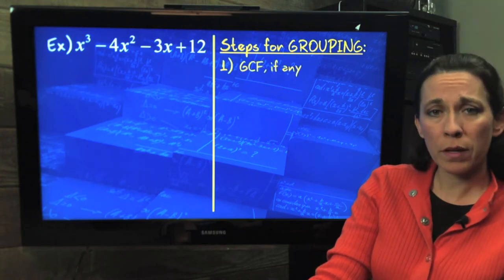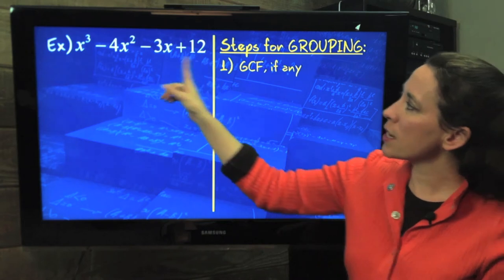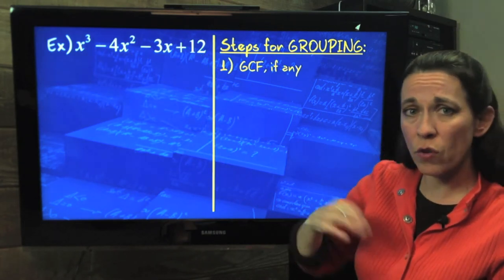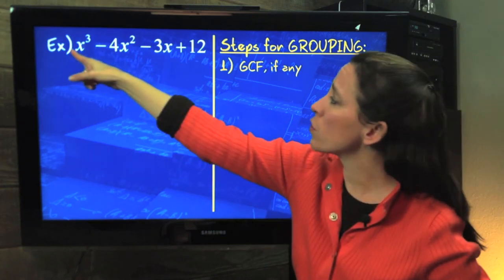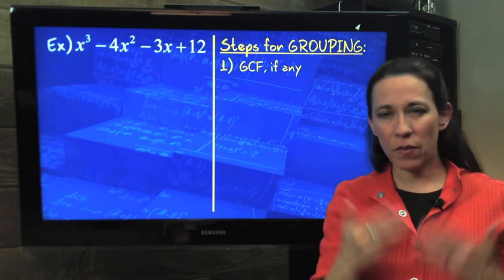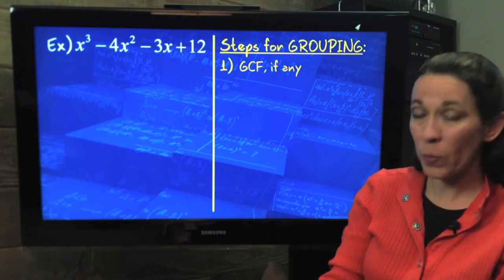So here are the steps for grouping. First step, GCF if any. There's no GCF among the 4 here. This last constant does not have an x, so there's no variable in common. This first one here has a coefficient of 1, so taking out a GCF of 1 doesn't really do us any good, so there's no GCF. But we have to look.